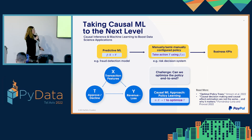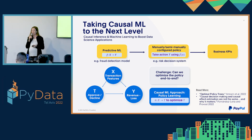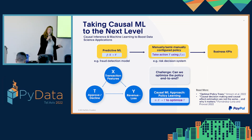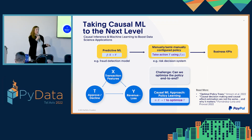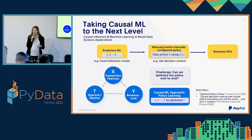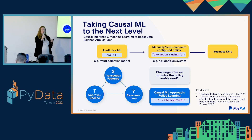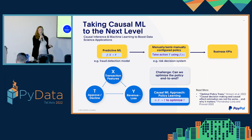Another challenge comes when we try to design a policy on top of an already trained machine learning model. Can we optimize a personalized policy end to end from features to actions? For example, in the fraud detection case, given transaction features, should we approve or decline this transaction considering our fraud prevention KPIs? The causal machine learning approach for policy learning provides a framework to explicitly or implicitly estimate what would happen if we take each of these actions, in order to optimize an overall end-to-end policy.